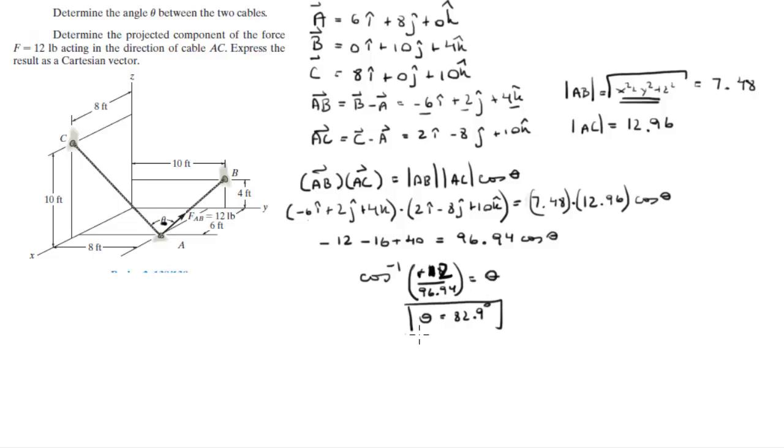Thus this angle right here between them is 82.9 degrees. The second part, which we're going to do now, they want you to find the projected component of F along AC. Very easy. First you need to find the unit vector AC, and it can be found by dividing the vector AC by its magnitude.